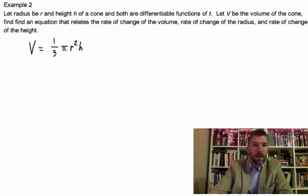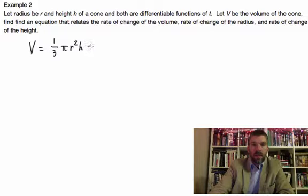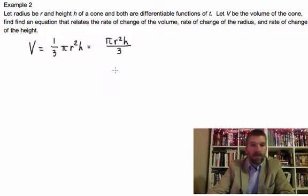And so how does this all work out then with what we're trying to do? Well, to clean us up just a little bit and give us a little bit easier look at it here, I'm going to go ahead and write pi r squared h over 3. That's the same thing.